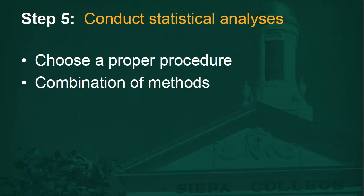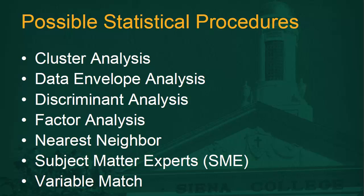The final step is to conduct your statistical analysis. You want to understand each of the procedures and which one will best suit you. You can even combine some of these methods until you are satisfied with your peer list. Possible statistical procedures are cluster analysis, data envelope analysis, discriminant analysis, factor analysis, nearest neighbor, subject matter experts (SME), or variable match. Nearest neighbor and cluster analyses seem to be the most popular. Asking people on campus or other subject matter experts is always helpful, and variable match is where categories such as enrollment size are matched to other institutions' variables.